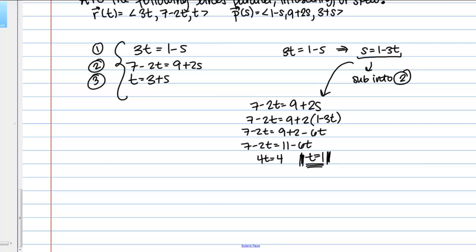Now let's find the associated s value. If t = 1 then s equals, well remember we had this relationship s = 1 - 3t. So I'm just going to plug in 1 there. So that's 1 - 3 or -2. So s = -2.